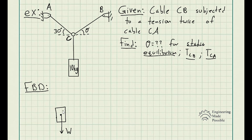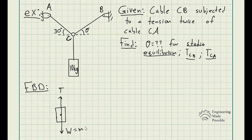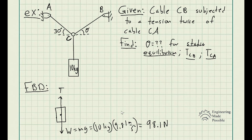I drew the cylinder, and from the center of mass, I'm drawing an arrow downwards representing the weight of that cylinder. Since we're dealing with objects at rest, there's a force equal and opposite going through the cable, equal to W. The weight equals mass times gravity, so it's 10 kilograms times 9.81 meters per second squared, giving us a weight of 98.1 newtons.